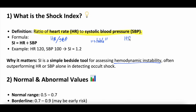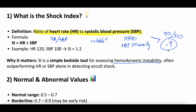For example, if a patient has a heart rate of 90 — not even flagged as high, that's a normal heart rate — and a systolic blood pressure of 100 mmHg, which shows up as normal in most EMRs, their shock index would be 90 divided by 100, which equals 0.9. And that is actually an abnormal shock index.